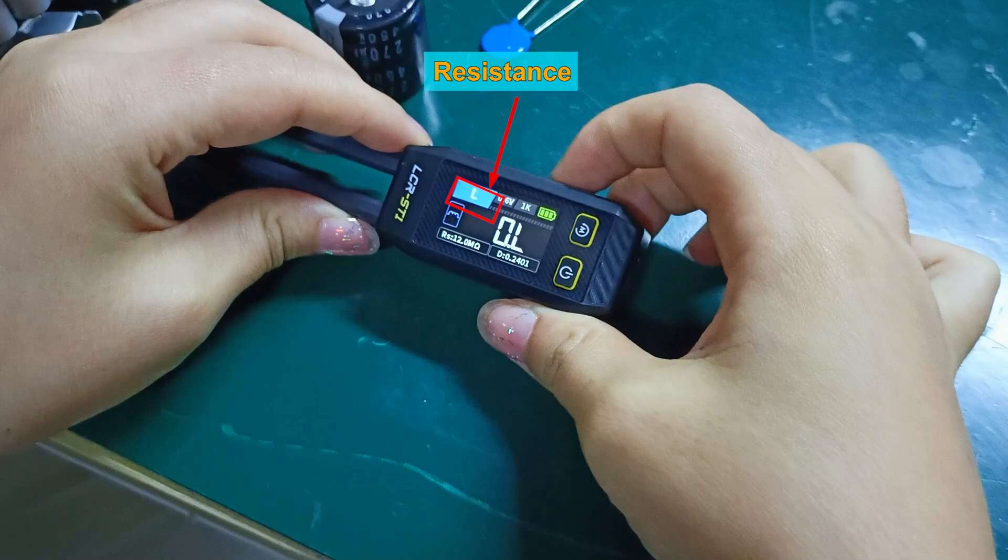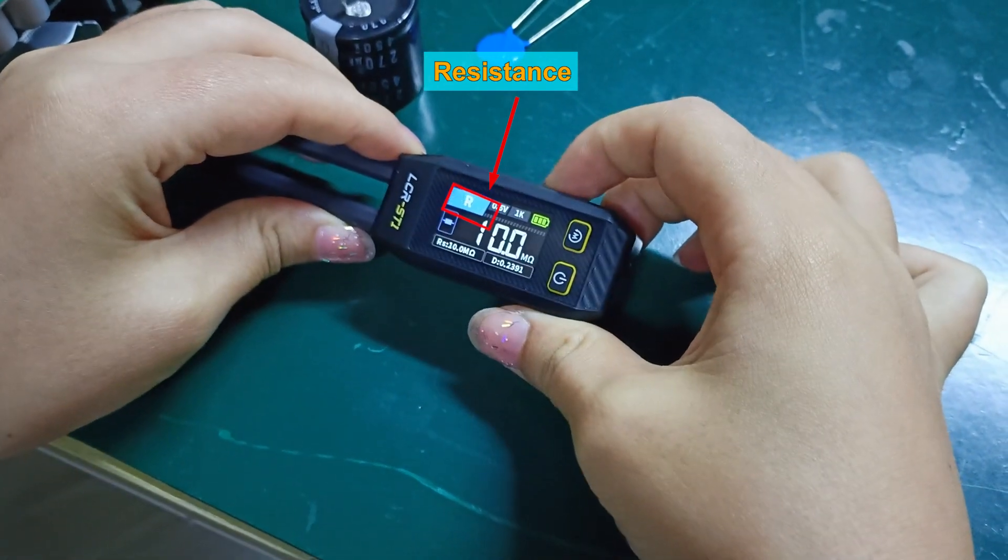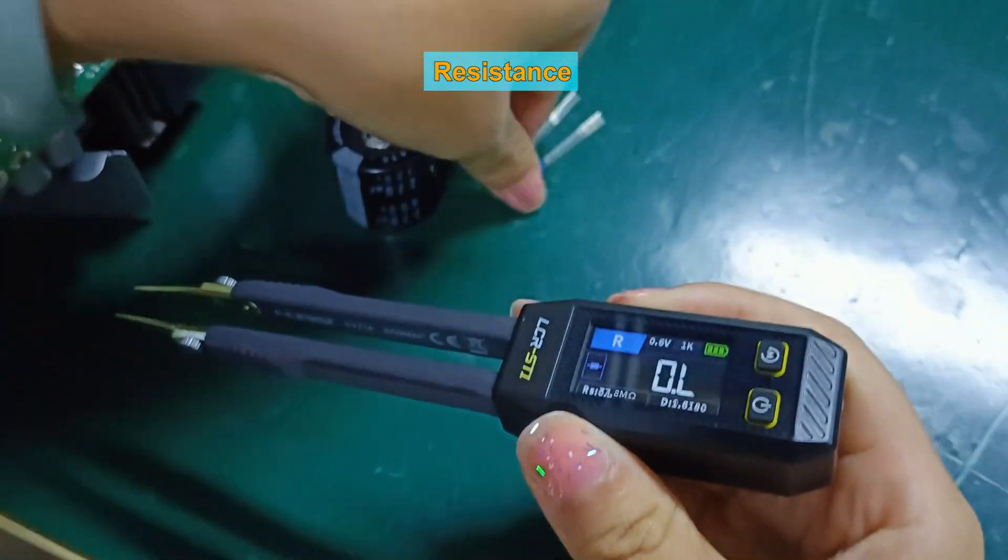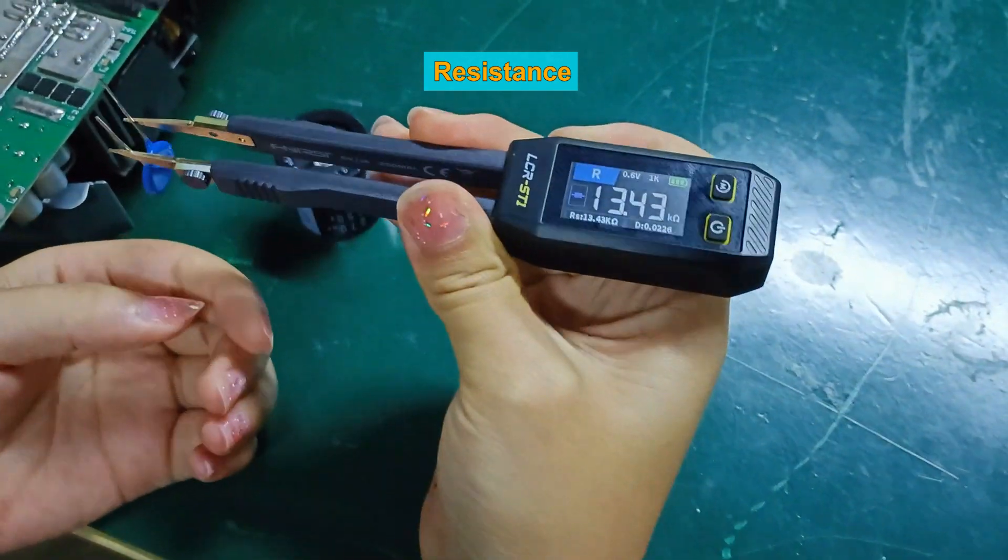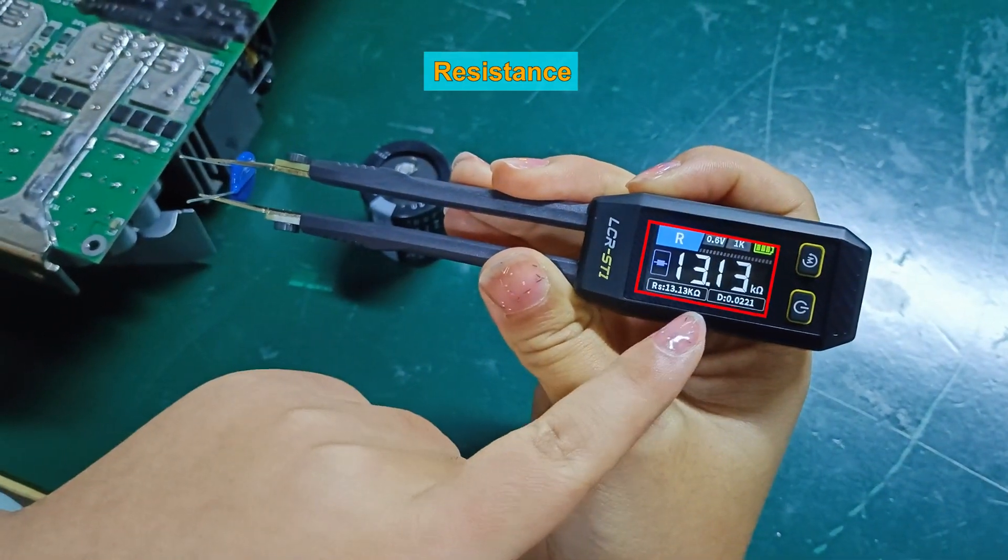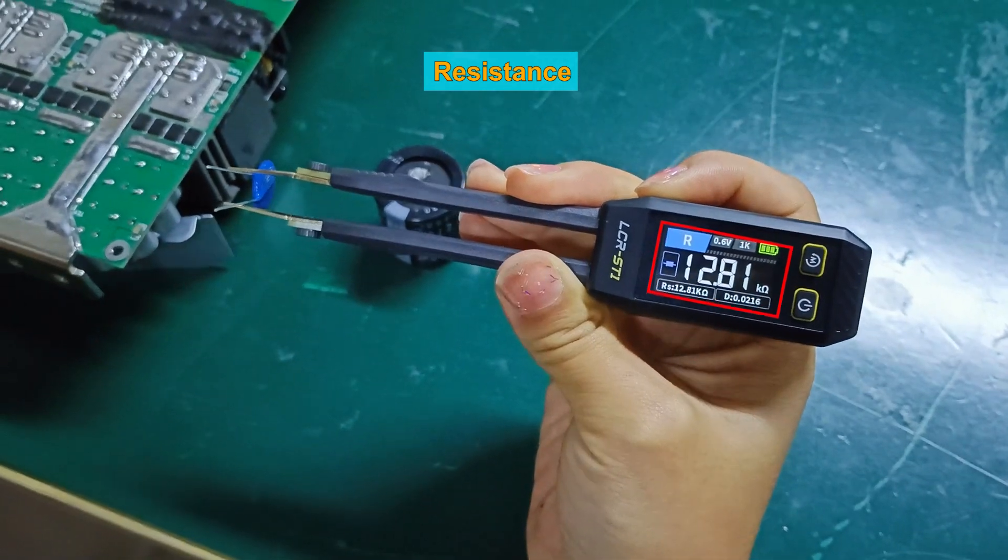Continue to swipe the dial button to switch to the resistance gear. The display screen quickly shows the parameters.